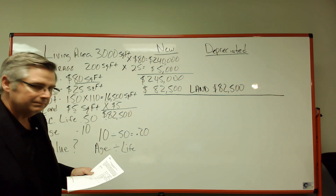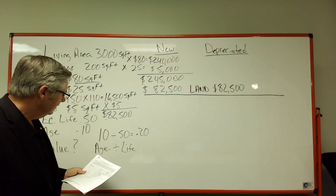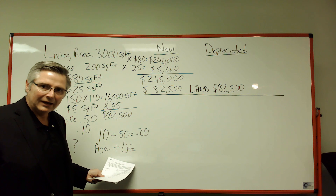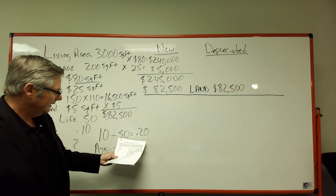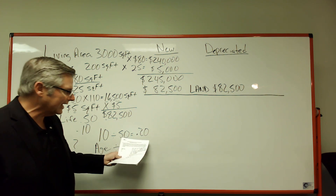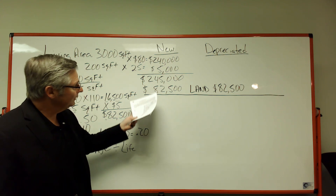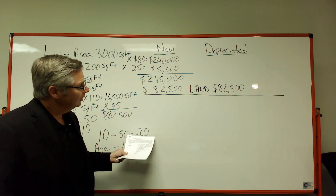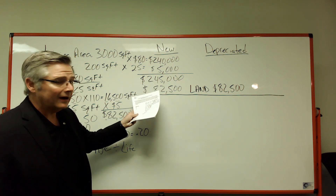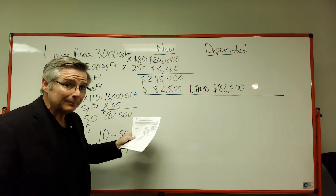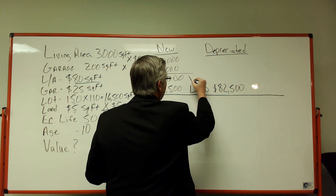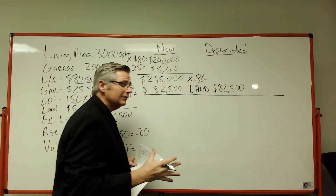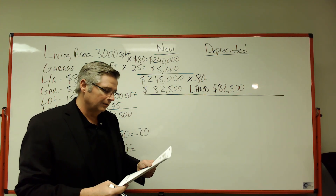This is called the age-life method. You take the age of the property and divide by the life — that gives you the depreciation rate. So 10 divided by 50 is 20%, meaning this house is worth 20% less than when it was new. If it's worth 20% less, then it's worth 80% of its value. So $245,000 times 0.80 will give us the depreciated value of this house.